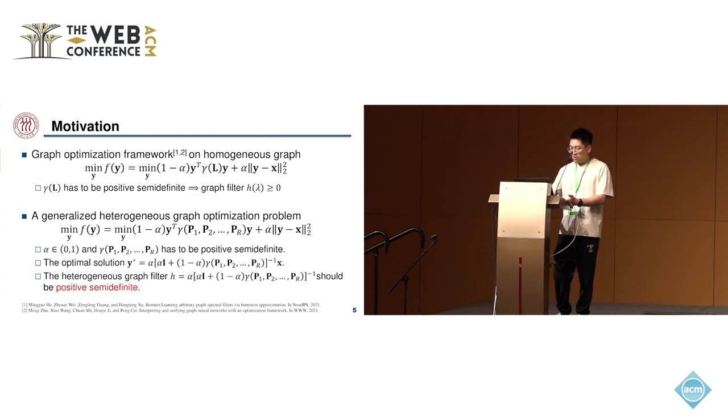Similarly, the function gamma has to be positive semidefinite, and we can obtain the optimal solution which denotes the heterogeneous graph filter. Then we can deduce the heterogeneous graph filter H of lambda has to satisfy a positive semidefinite constraint.